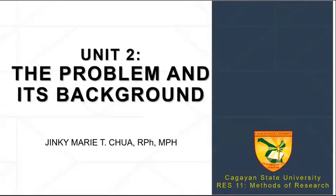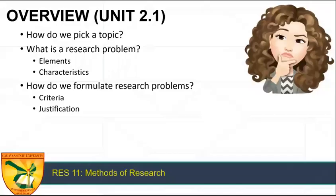Good day class. Welcome to REST 11, Methods of Research. We are here at Unit 2, the problem and its background. This unit consists of two parts. Part 1 is on research problem. This is where you will pick a topic and formulate your research problem. And part 2 is on writing chapter 1 of your proposal. You can revisit your syllabus to see this sequence. In this PowerPoint video for Unit 2.1, we will look at some questions about research problem.